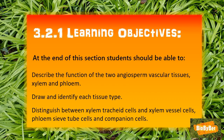Hi biologists. At the end of this section, following the biology syllabus, you should be able to describe the function of the two angiosperm vascular tissues — xylem and phloem — draw and identify each tissue type, and distinguish between xylem tracheids and xylem vessel cells, and between phloem sieve tube cells and companion cells.